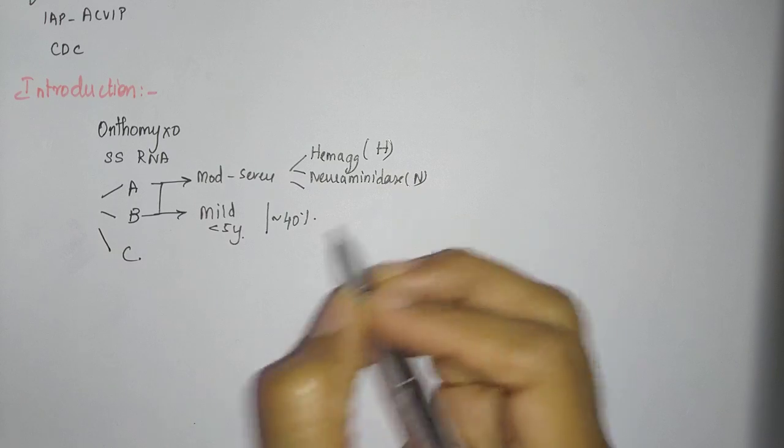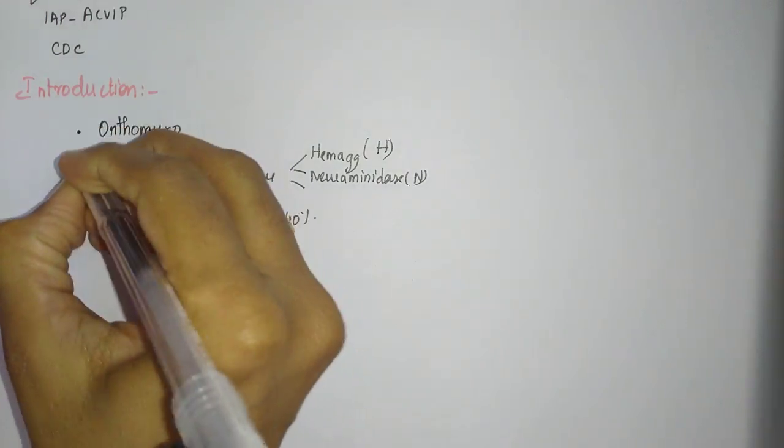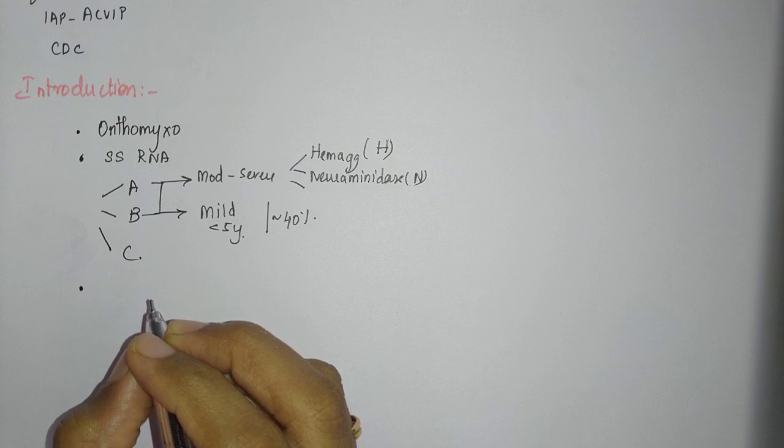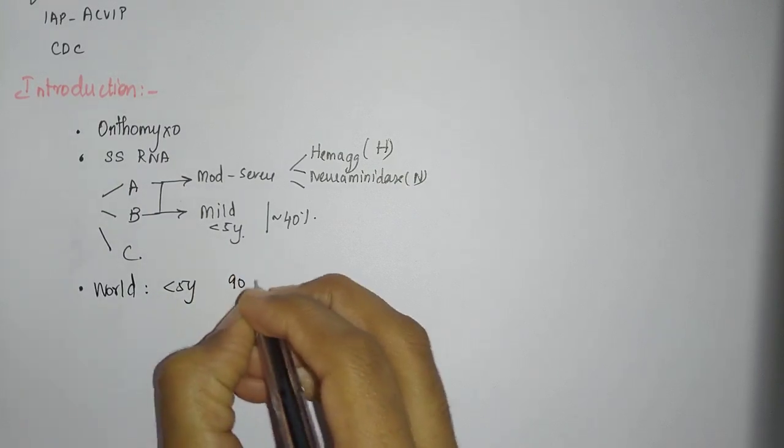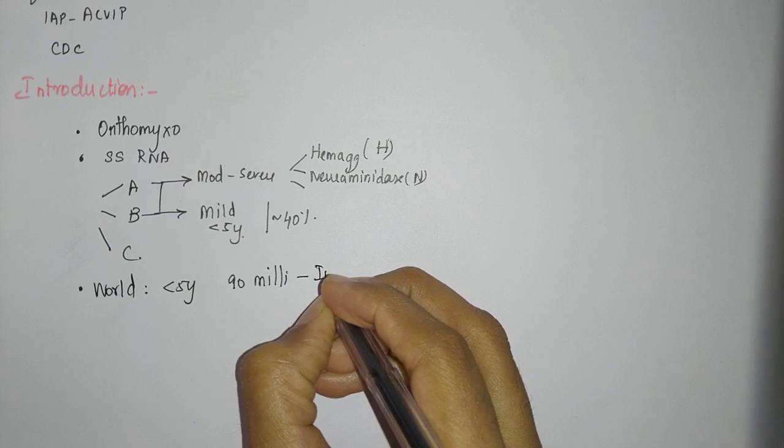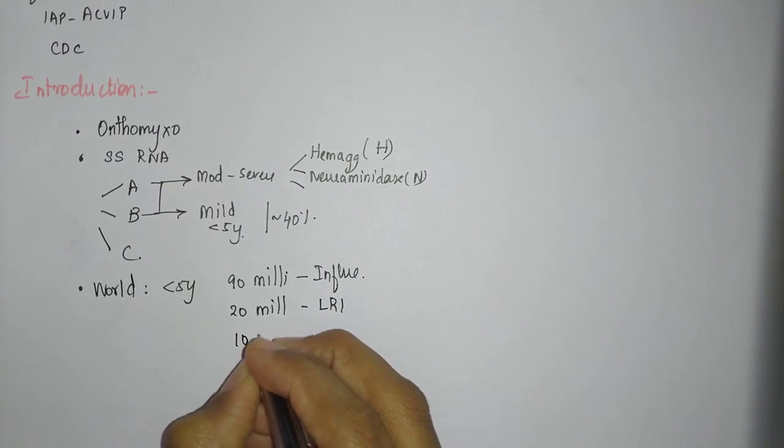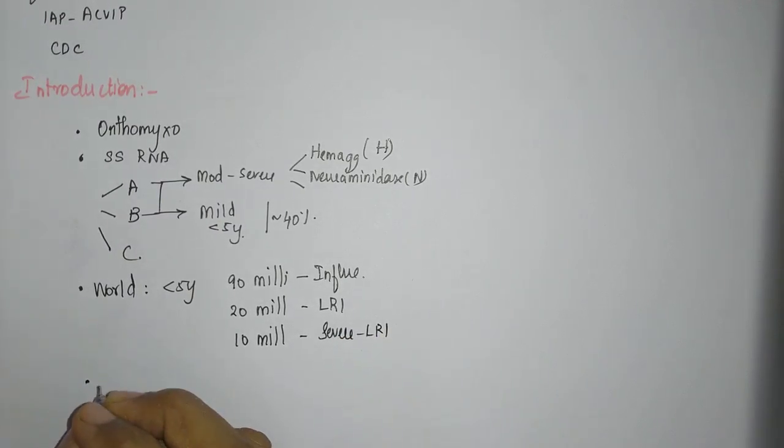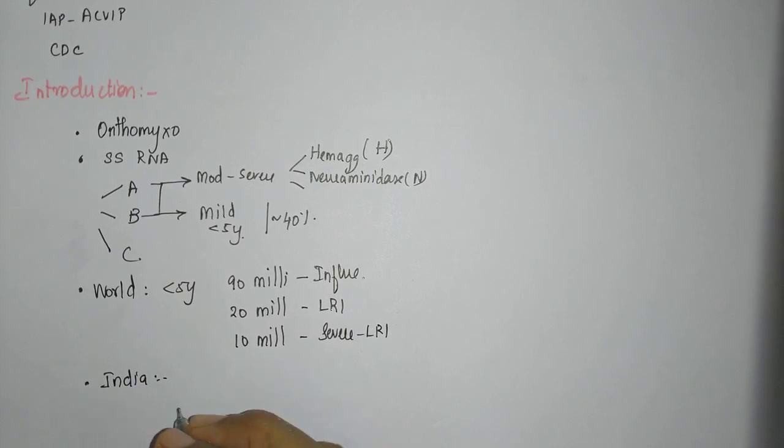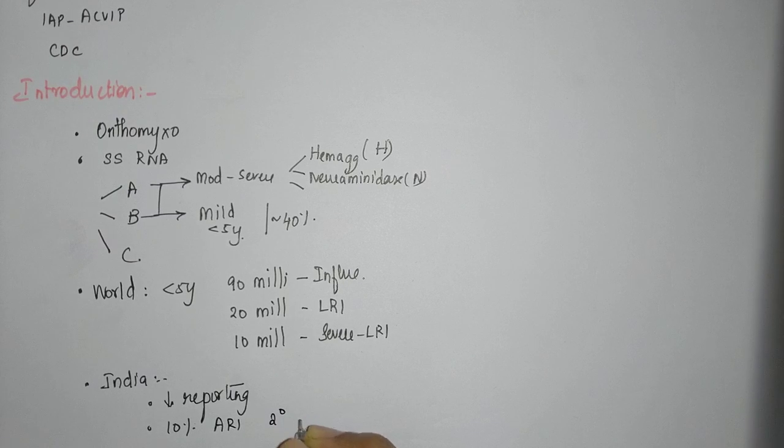Coming to the disease burden: in the world, under 5 years, 90 million are recorded to have influenza-like illness. 20 million have lower respiratory tract infection, and among 20 million, 10 million have severe form of lower respiratory tract infection. In India, we definitely have gross under-reporting, but even with this under-reporting, up to 10% of acute respiratory infections are secondary to influenza.